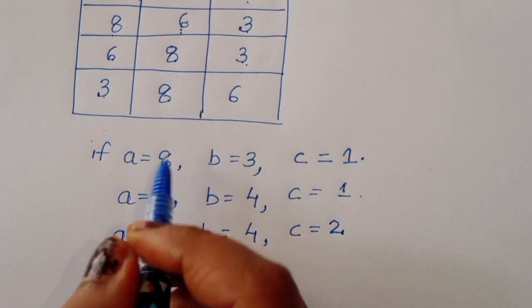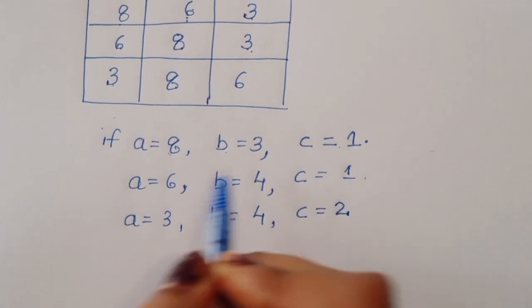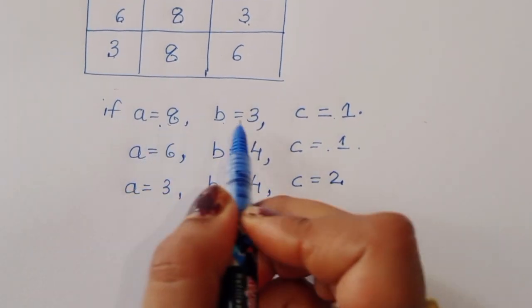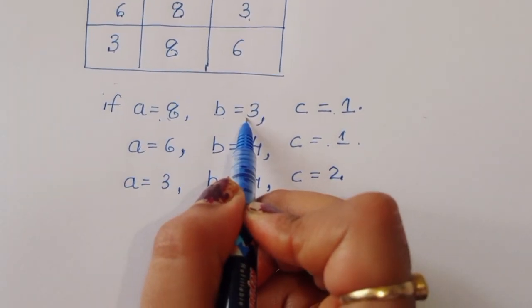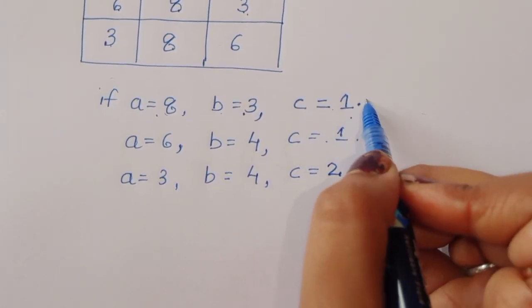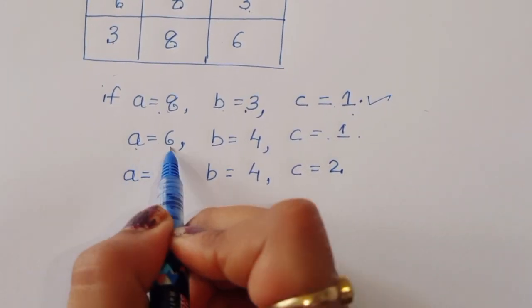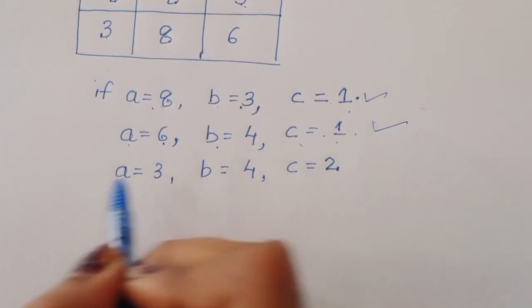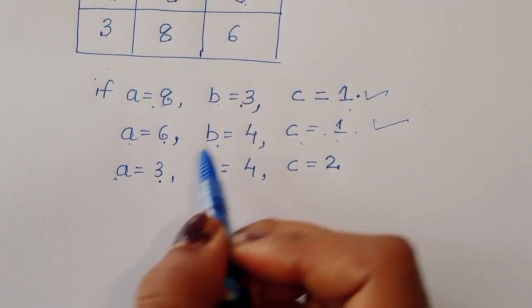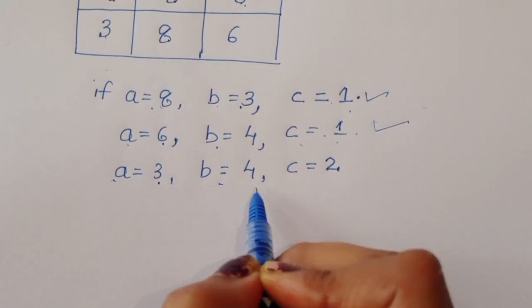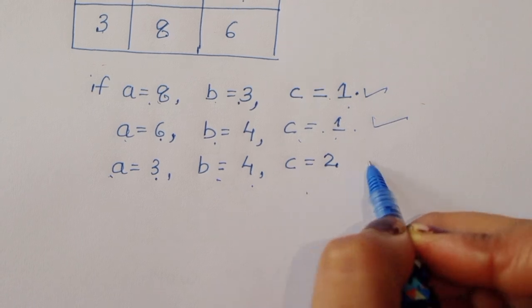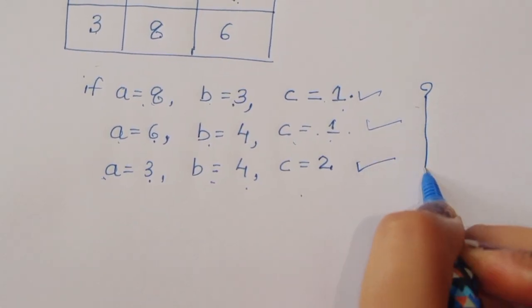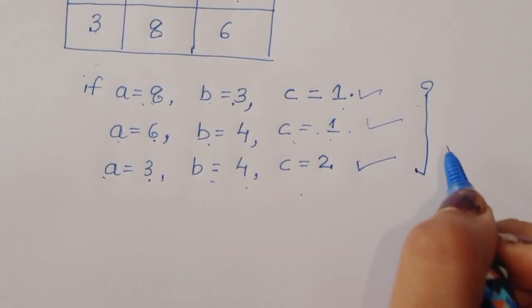So the three solutions are: if A = 8, then B = 3 and C = 1; if A = 6, then B = 4 and C = 1; and if A = 3, then B = 4 and C = 2.